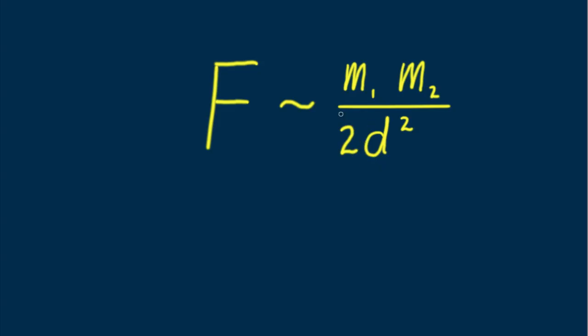We have to include the two in the distance to be squared. We square the two, which, aha, gives us 4d squared in the denominator. Can you see this results in one fourth the original force of gravity?